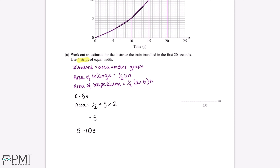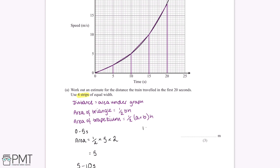For the time between 5 and 10 seconds, the area equals a half multiplied by (2 + 5), which is the sum of the parallel sides, multiplied by the height of 5, giving an answer of 17.5. Between 10 and 15 seconds, the area equals a half multiplied by (5 + 10), the sum of the parallel sides, multiplied by 5, giving an answer of 37.5.